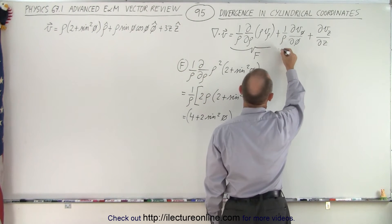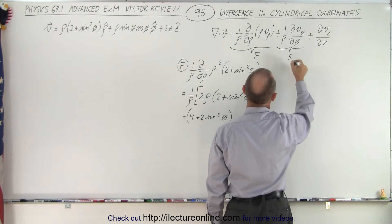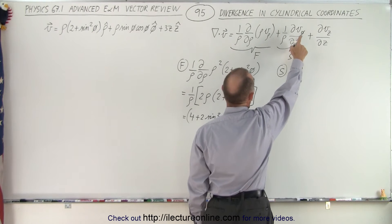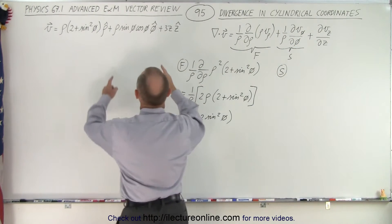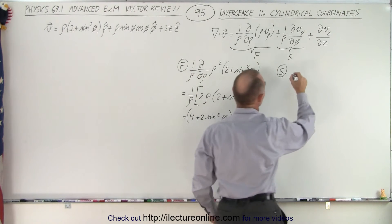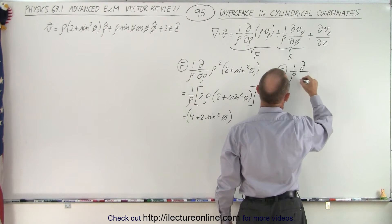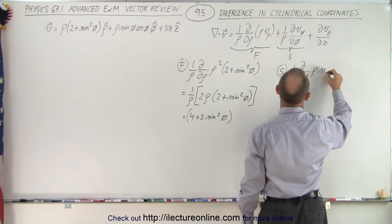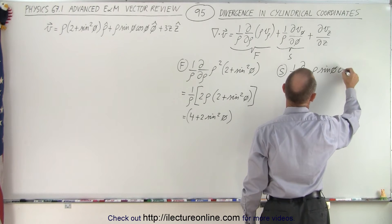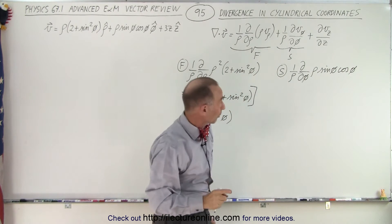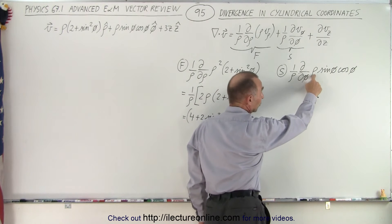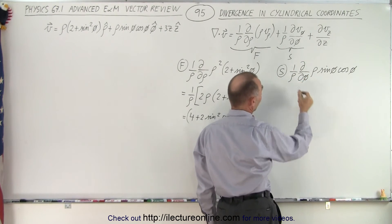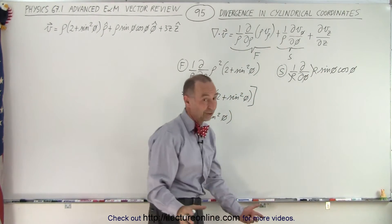Now the second component. Here we have 1 over rho times the partial derivative of the phi component with respect to phi, and the phi component is right here. So we end up with 1 over rho times the partial derivative with respect to phi of rho times sine of phi times cosine of phi. Since we're taking the partial derivative with respect to phi, rho is a constant, so we can take it outside the derivative — rho divided by rho cancels out, they're just constants.